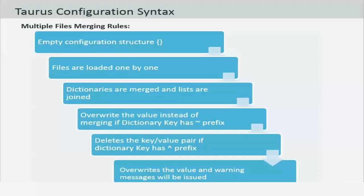The loaded dictionary is merged recursively into the configuration — dictionaries are merged, however lists are joined. If the dictionary key has a tilde prefix then it will override the value instead of merging it. If the dictionary key has a caret prefix then it will delete the corresponding key-value pair. If dictionary values have different types, for example a string value versus arrays, then the value will be overwritten and a warning message will be issued.